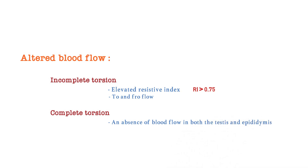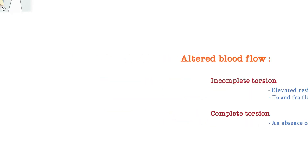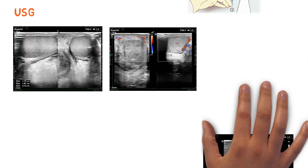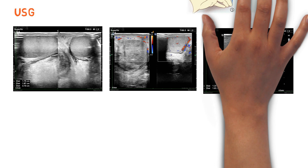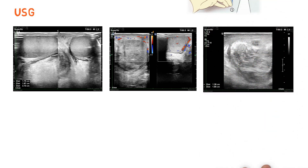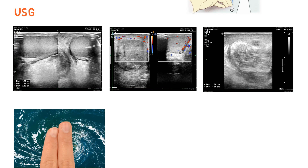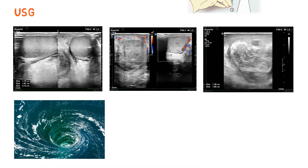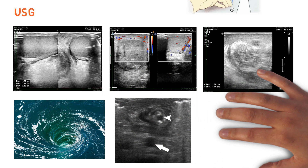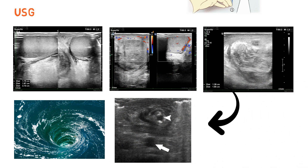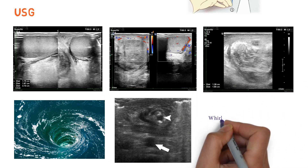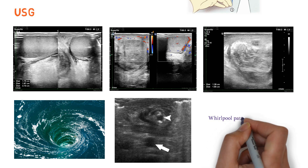Looking at the spermatic cord, we can see twisting of the spermatic cord. On transverse section of the spermatic cord, a characteristic sign of testicular torsion called the whirlpool sign can be identified. This is a key imaging finding.